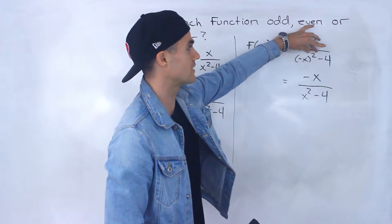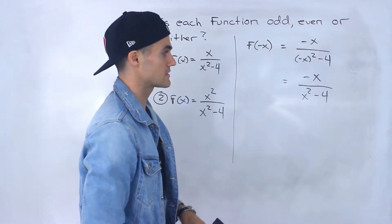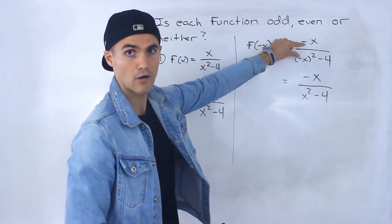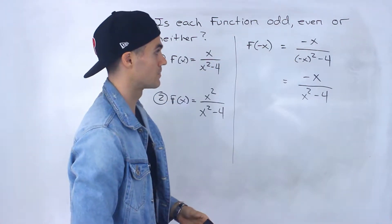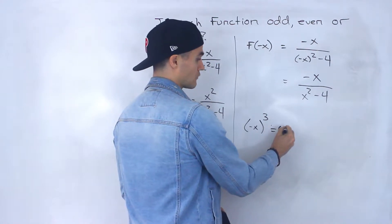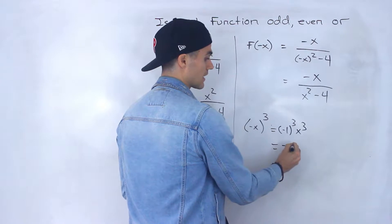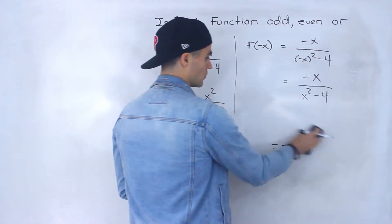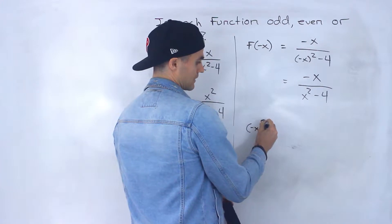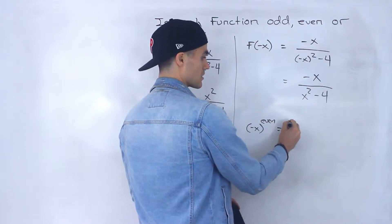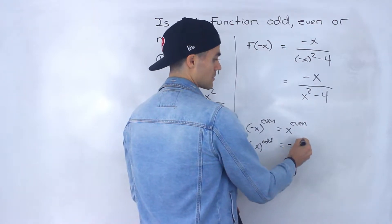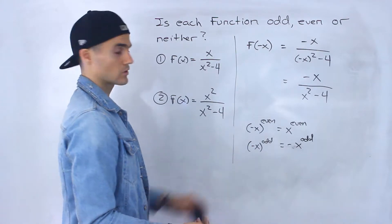Whenever you have negative x to the power of an even exponent, it's always just going to equal x to the power of that even exponent, because you're going to end up having negative 1 to the power of an even exponent, which is always positive 1. But if that exponent is odd — like negative x to the power of 3 — that's going to be negative 1 cubed times x cubed, which stays negative. So as a general rule: negative x to an even exponent equals x to that even exponent, but negative x to an odd exponent equals negative x to that odd exponent.